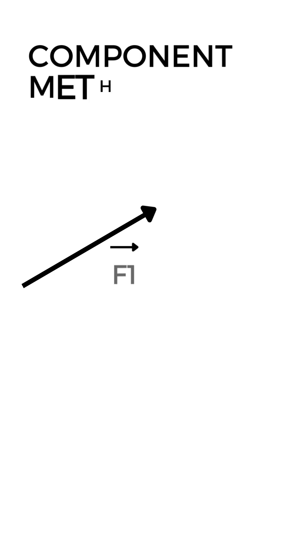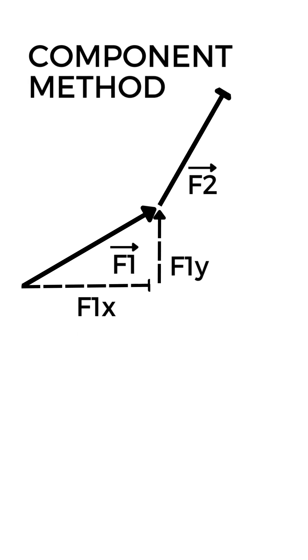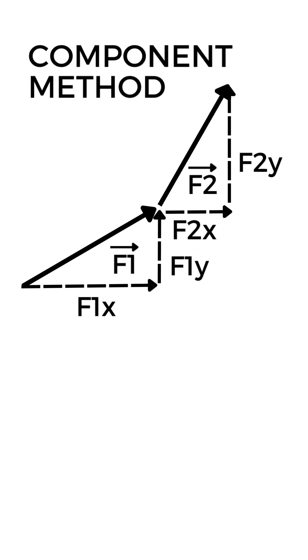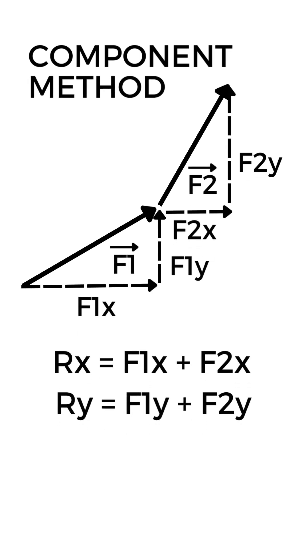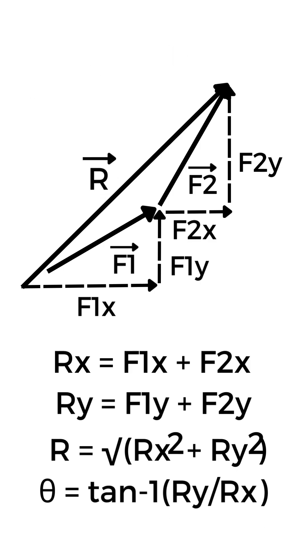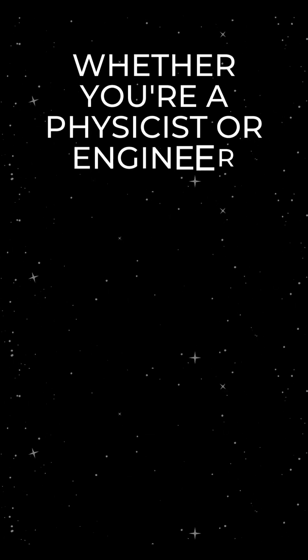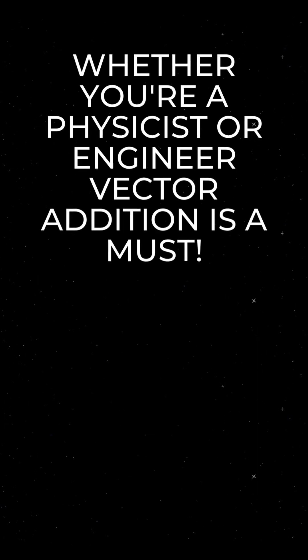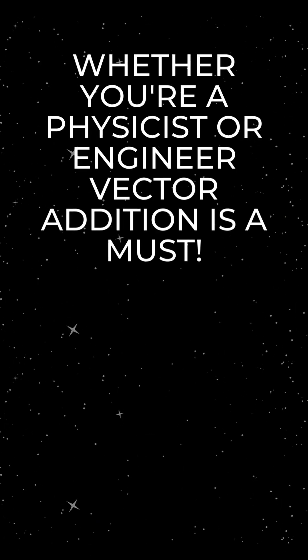The component method involves breaking down each vector into its x and y components, adding the components separately, and then combining them to obtain the resultant vector. So whether you're a physicist or an engineer, understanding vector addition is a must.